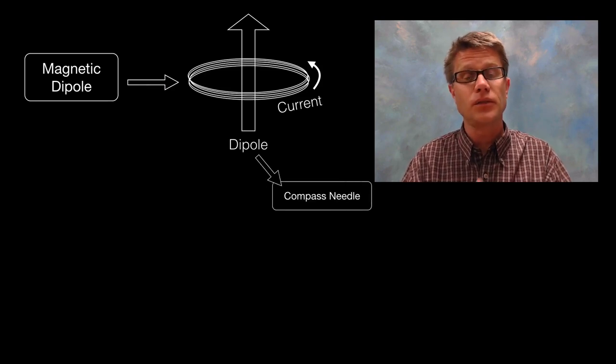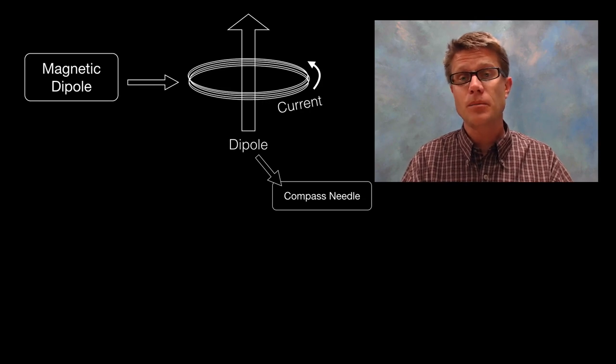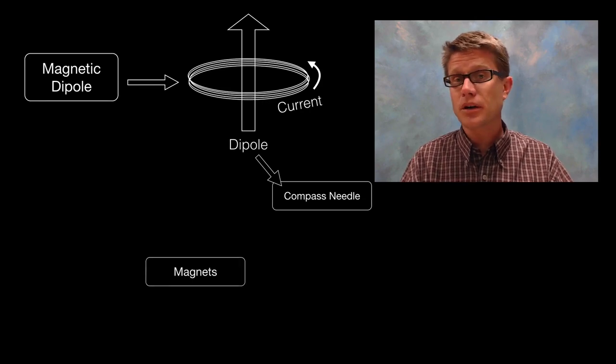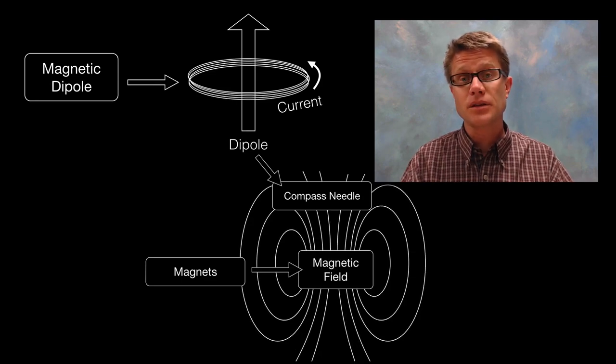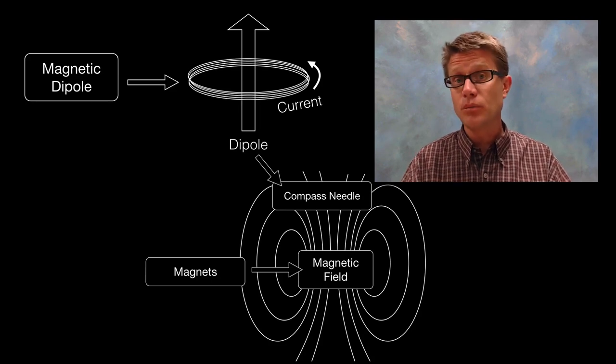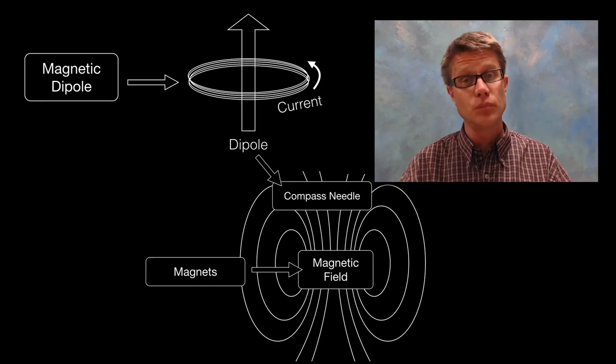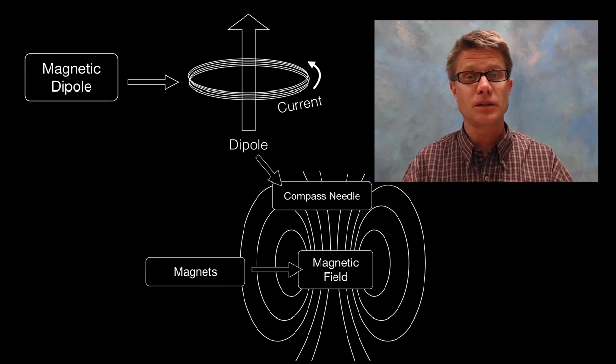So like a compass needle, a floating compass needle is going to be a magnetic dipole. And so if we put a compass needle next to a magnet, again that magnet is going to generate a magnetic field. And so that compass needle, since it's a magnetic dipole, is going to respond to that field. It's going to move. It's going to experience a torque and move in relation to that magnetic field.